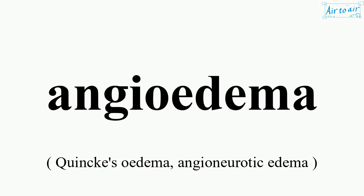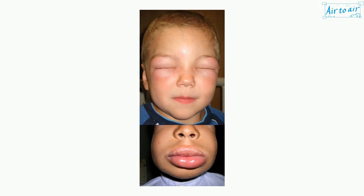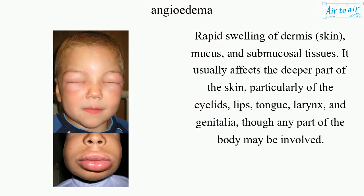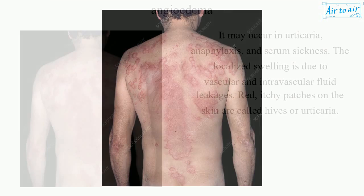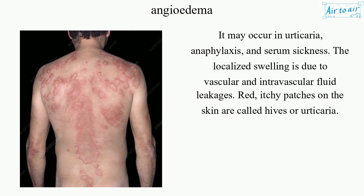Angioedema. Rapid swelling of dermis, skin, mucous, and submucosal tissues. It usually affects the deeper part of the skin, particularly of the eyelids, lips, tongue, larynx, and genitalia, though any part of the body may be involved. It may occur in urticaria, anaphylaxis, and serum sickness.